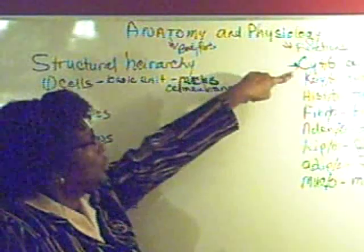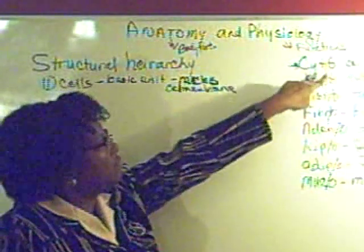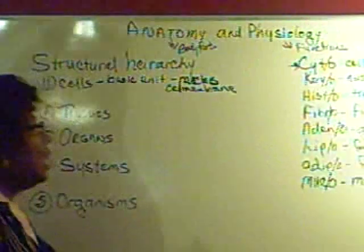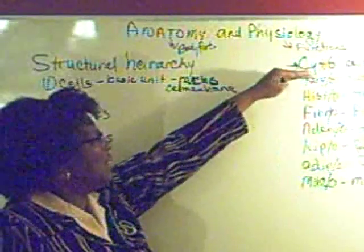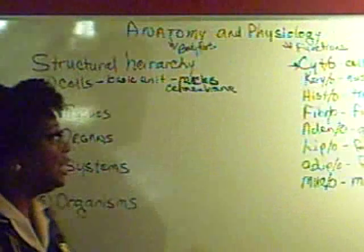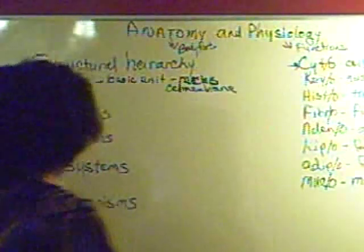The root is cyte. The combining form is cyto. I will not say the root and the combining form. I'll just say the combining form because it's easier.